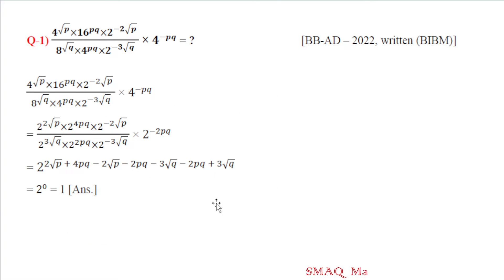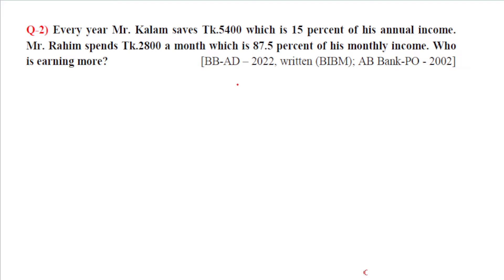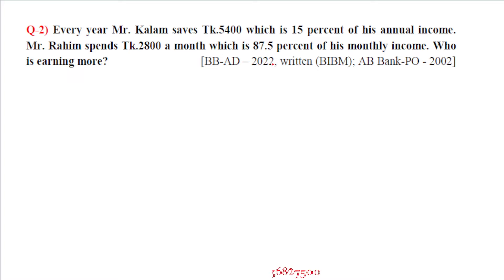Question number 2: Every year Mr. Column saves 5,400 which is 15% of his annual income. Mr. Rohim spends 2,800 a month which is 87.5% of his monthly income. Who is earning more?